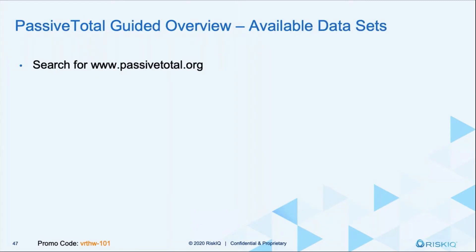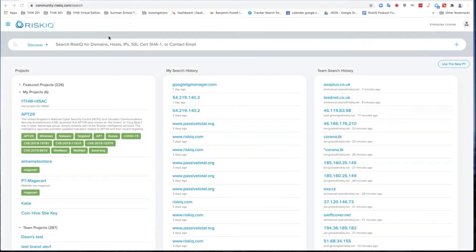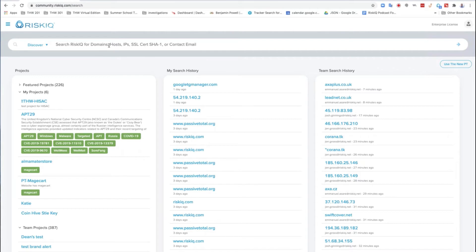What we're going to do is start going through and looking at a domain and talk about the different things that we're seeing. I'd like you to search for passivetotal.org. I'm going to take over, Alex, because it's going to be a little bit easier. Thanks for running the slides so far. I'm going to make myself presenter and show my screen. We can see it, Benjamin — okay. I've logged into Passive Total, and there are two different views that you can see.